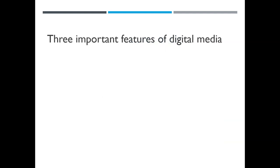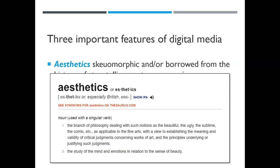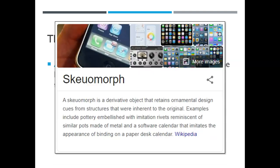There are a couple of important features of digital media you need to know about. The first one is aesthetics. The aesthetics of digital media are skeuomorphic, or they are borrowed from the history of storytelling, contemporary cinema, TV, and things like that. Aesthetics is, in a simple way, the study of that which is beautiful — what do we humans think is beautiful? That changes by person, by culture, etc. When we talk about digital media, we borrow the aesthetics of previous media. That idea is called skeuomorphism.